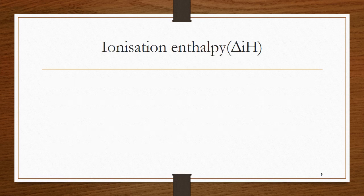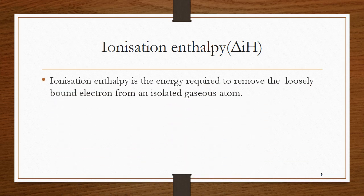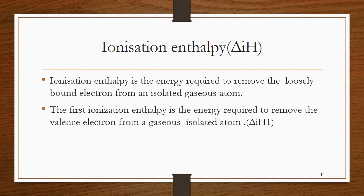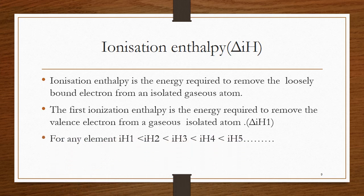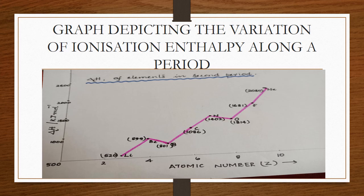Coming to the next important point — ionization enthalpy, depicted by delta HI. It is the energy required to remove the loosely bound electron from an isolated gaseous atom. The first ionization enthalpy is the energy required to remove the valence electron from a gaseous isolated atom. For every element, the first ionization enthalpy is always less than the second ionization enthalpy, which is again less than the third, and so on. This graph represents the variation of ionization enthalpy along a period, and a closer look shows that the ionization enthalpy doesn't change gradually — the reason for the dip in the curve will be discussed in detail in this chapter.